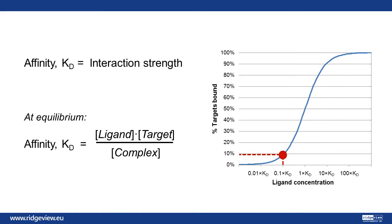With a tenth of the KD, only 9% of the targets are in a complex, but with 10 times the KD, the number is 91%. This means that it's not the molar ratio between ligand and target that matters when estimating target occupancy, but rather the concentration of the ligand relative to the KD.